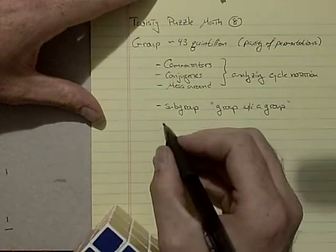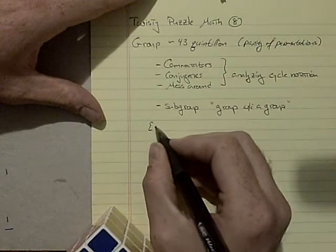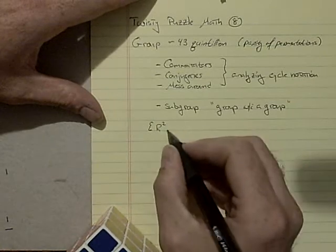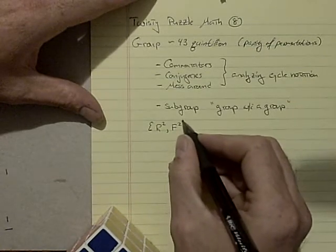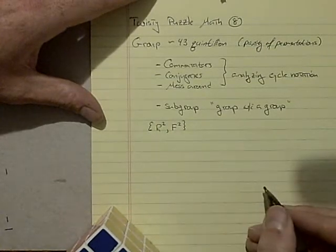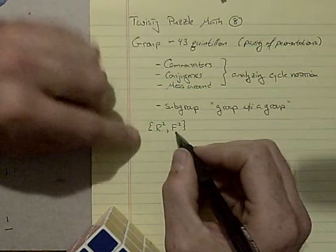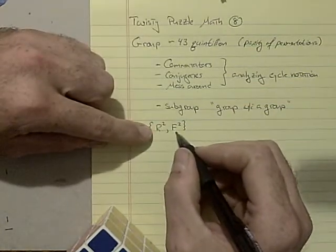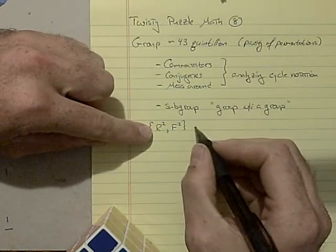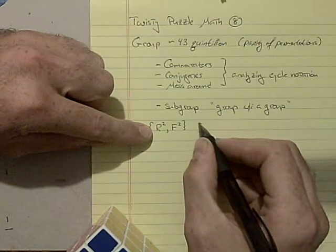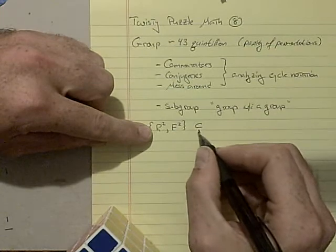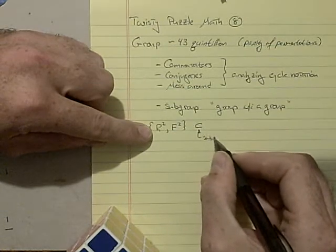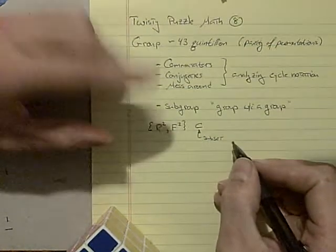So consider all the moves generated by R² and F². This is a very small group. If you only consider moves generated by this group, it's going to be inside, this means a subset, like a U on its side, so this means subset of the cube group.